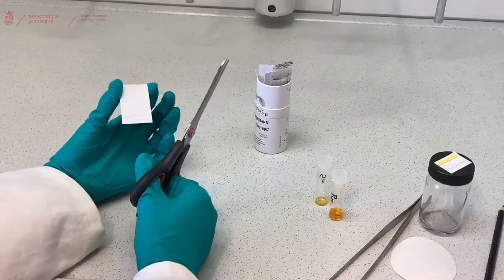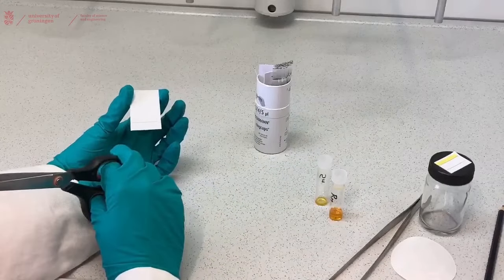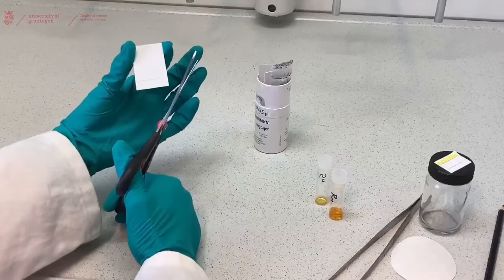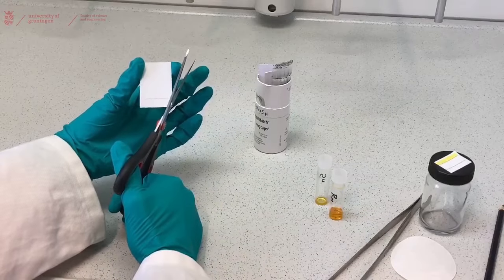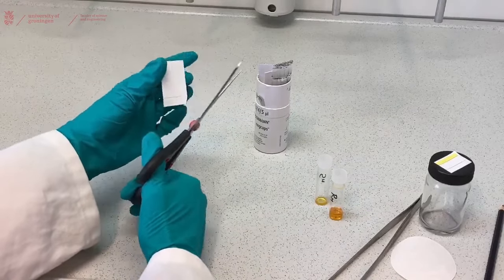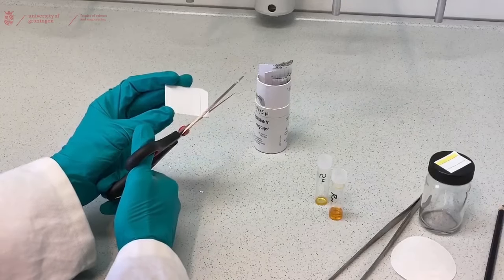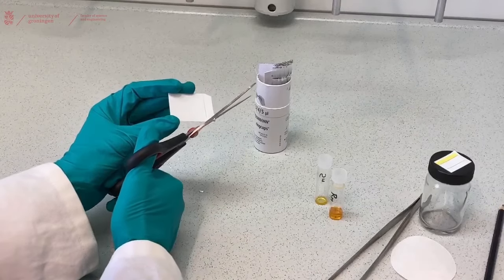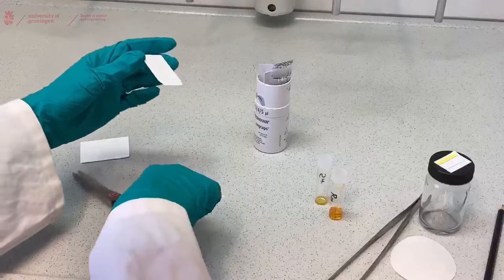Now there is one more thing we need to do before we start adding our spots and that is cutting off the corners, so a slight cut in the corners. That will make sure that our solvent front will be nice and smooth over the whole TLC plate.